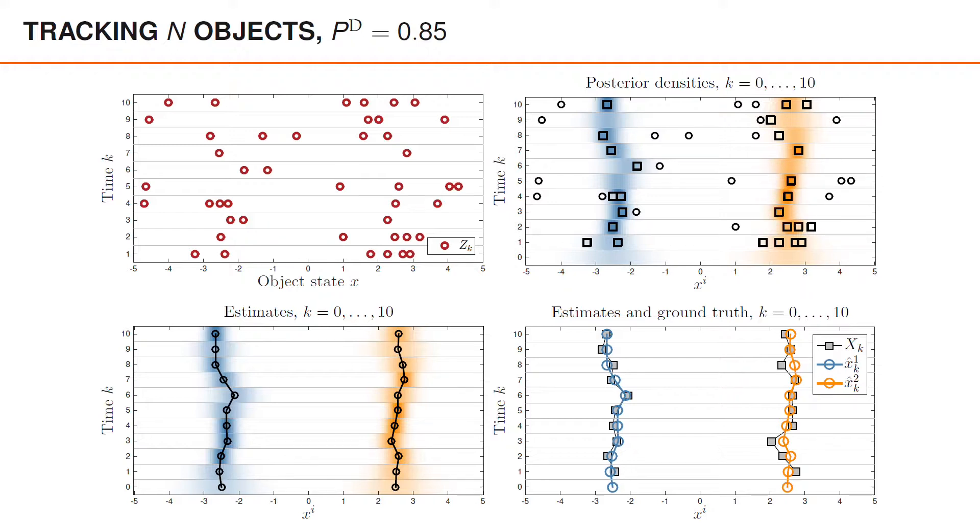In other time steps, there are multiple detections that share the association probability. For example, for object one on the left at time four, and for object two on the right at time one. Lastly, there are some time steps where the probability of misdetection is more or less equal to one. We can see this for object one at times five and nine, and for object two at time six.